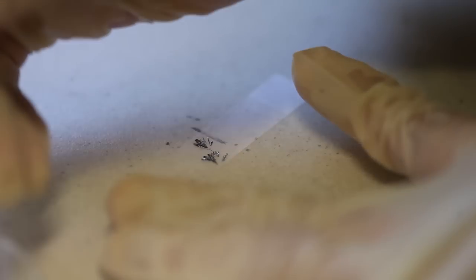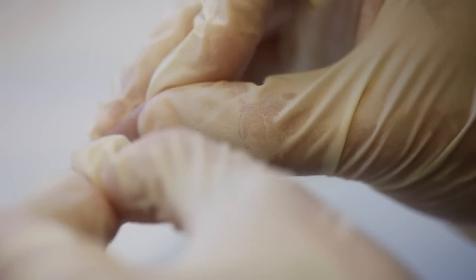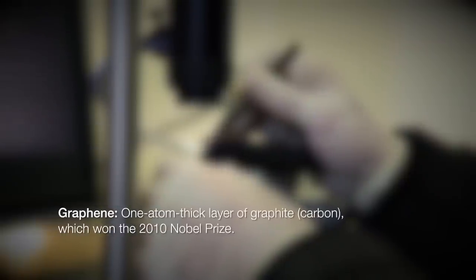We used a similar way that was used to fabricate graphene to fabricate phosphorene. We used Scotch tape to thin down the material from the bulk state to a few layers and finally to a monolayer.